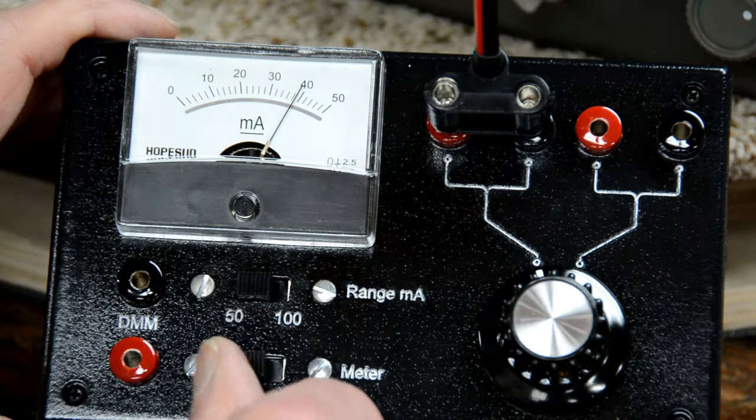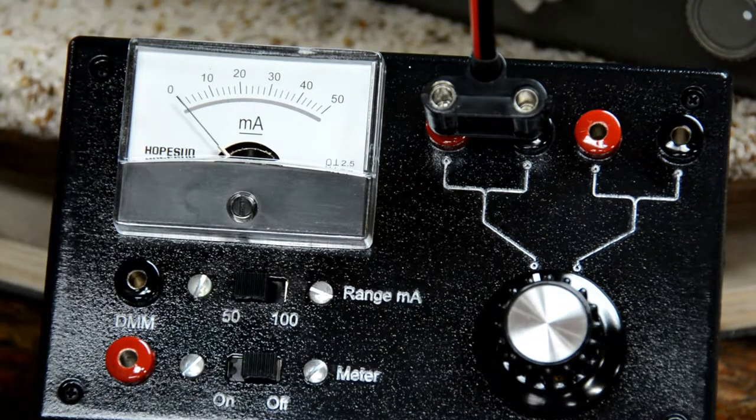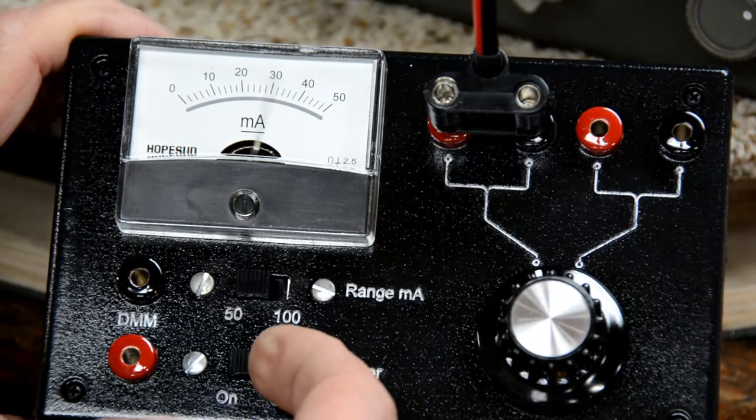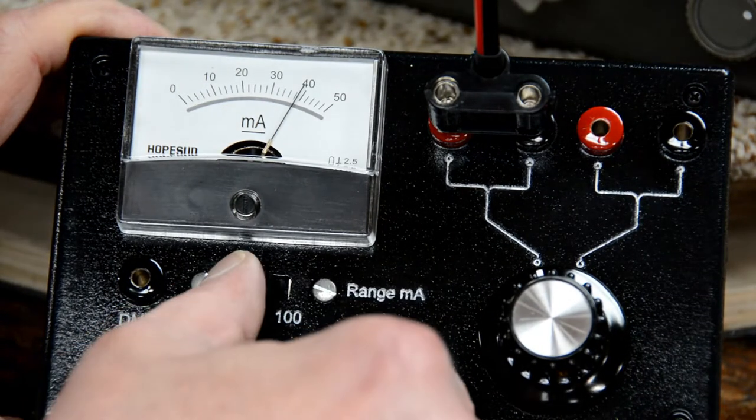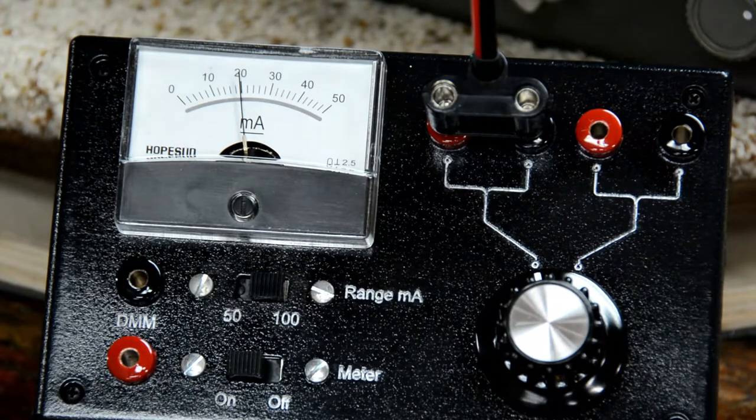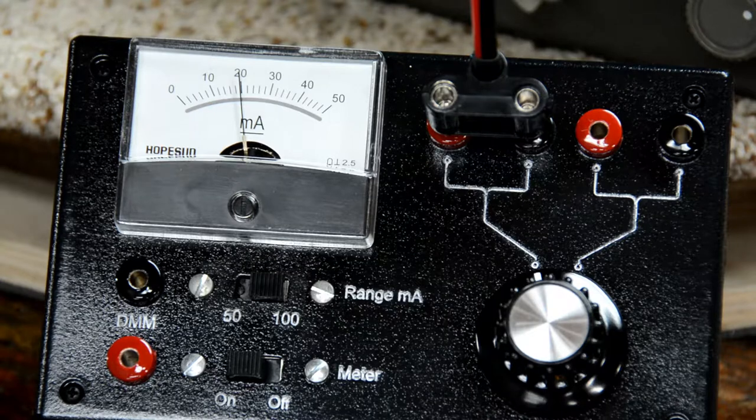Now if I turn off the meter, nothing happens. The radio is off. I'll put it over to 100 milliamps and that doubles the scale of the meter.